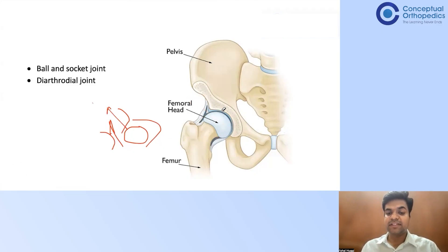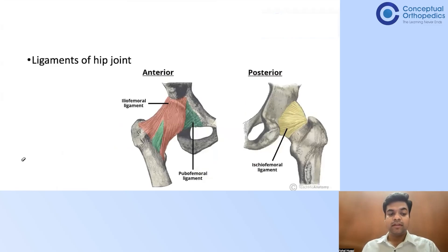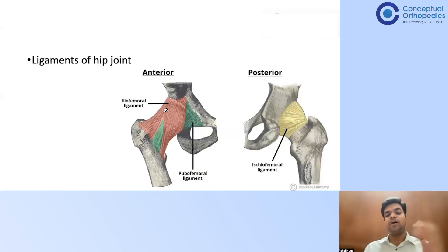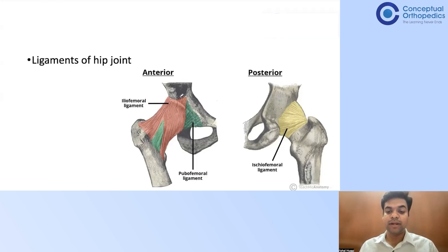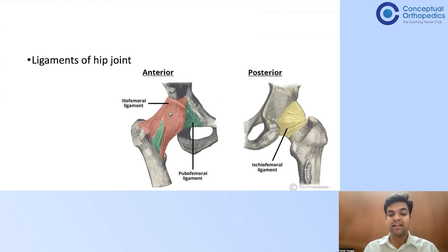Apart from bony architecture, there is something called ligamentum teres which is inside, and other ligaments. Anteriorly there is the iliofemoral ligament. The acetabulum is formed by the ileum, pubis, and ischium bones — all three connect to the femur. So: ileum connecting to femur is the iliofemoral ligament, pubis connecting is the pubofemoral ligament, and ischium connecting is the ischiofemoral ligament. The iliofemoral ligament is the strongest ligament.